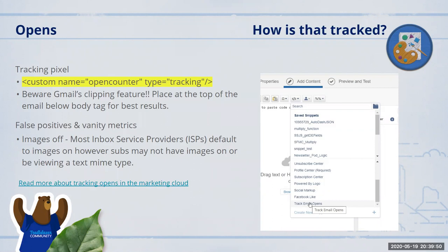Talking briefly about false positives and vanity metrics: if images are off or if your subscribers are viewing emails on a device where images can't be rendered, an open will not be counted. Because of this, opens is considered a vanity metric. It's not a static metric that can tell you exactly how your emails are performing — it's more of a high-level overview to see that people are engaging with your content.